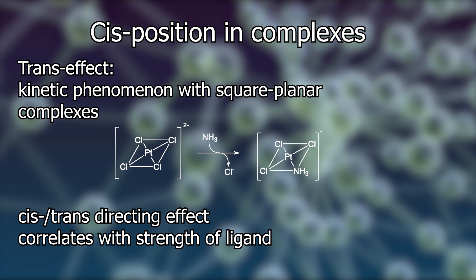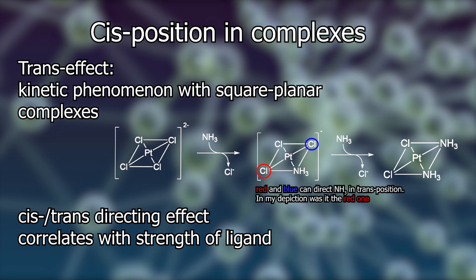Wait a minute. Isn't amine the stronger ligand? Shouldn't it direct the second amine ligand to the trans position? Not with divalent platinum. In aqueous solution, the chloride ligand is the stronger ligand and has a stronger trans-directing effect. These two chloride ligands have opened the trans position for the second amine to end up in the cis position relative to the first amine ligand.